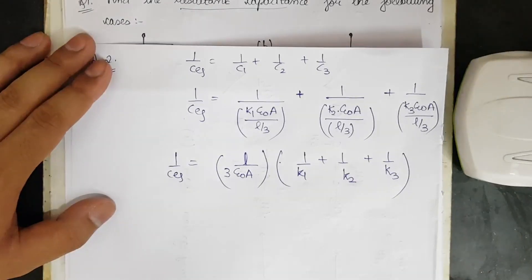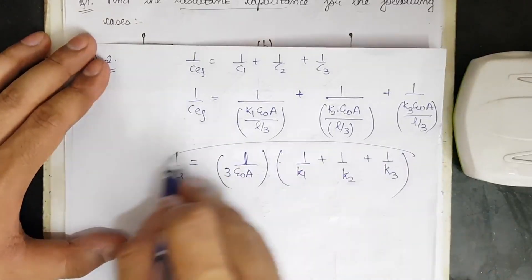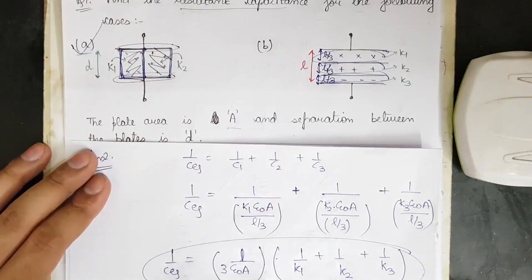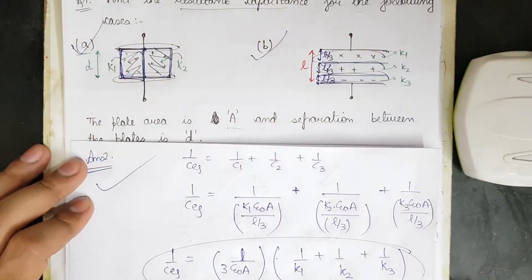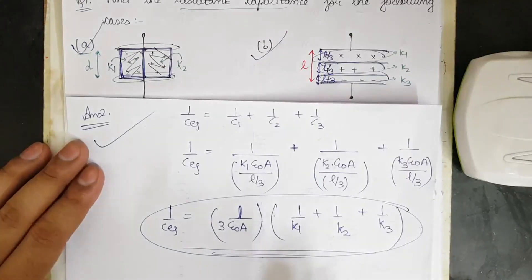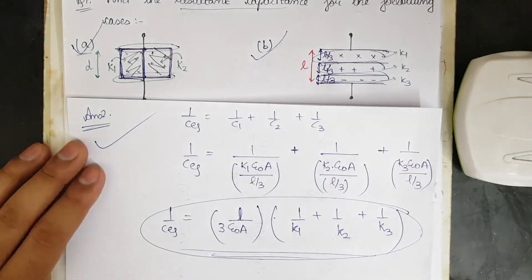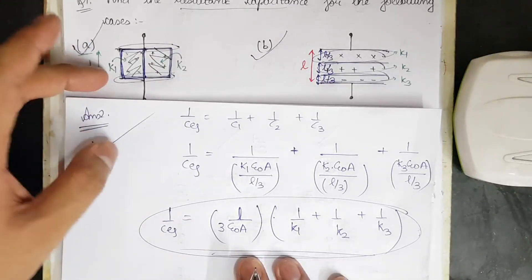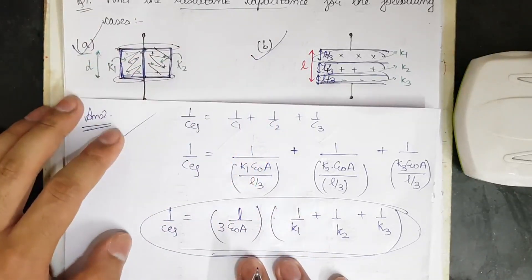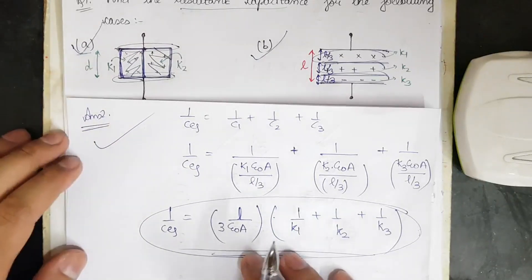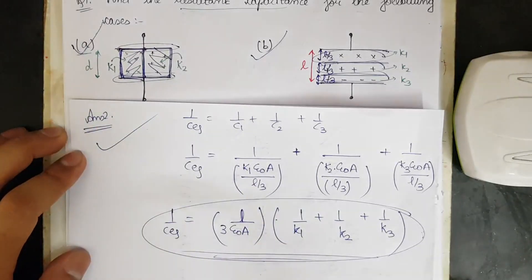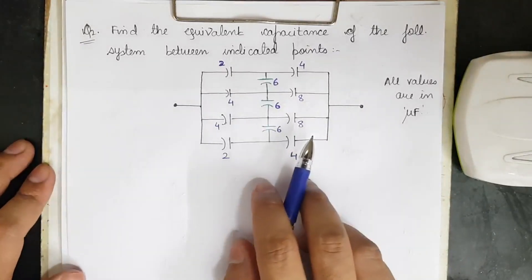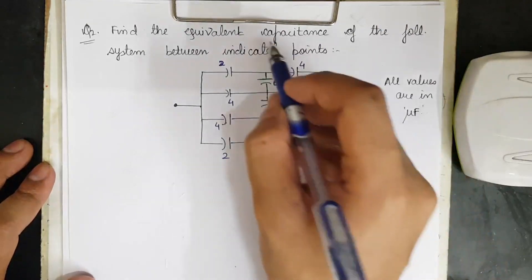That is the final answer for C_eq in the series case. I've shown two examples — first the parallel configuration and then the series one — to illustrate the difference. For JEE 2015–2016 papers, questions on this chapter with dielectrics have been relatively easy, giving you a good chance of scoring marks.